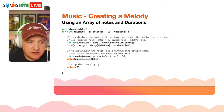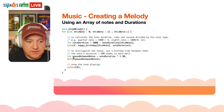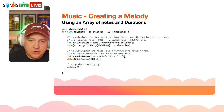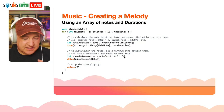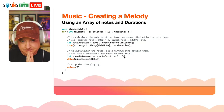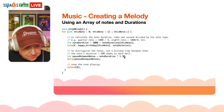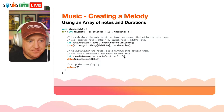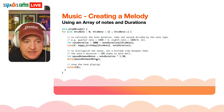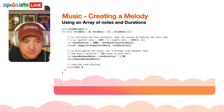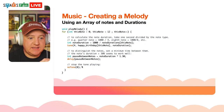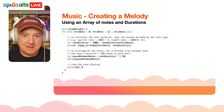The pause between notes is calculated as noteDuration × 1.3 — that 30% extra is a fudge factor to adjust tempo if the notes are playing too fast or too slow. Then we delay by that pause value, and after the pause we call noTone() to stop the note. That's our playMelody function — it stays the same while we can swap in different melody and duration arrays.